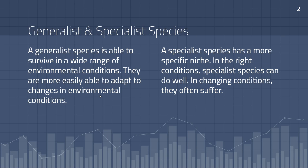A specialist species, on the other hand, has a more specific niche. In the right conditions, we can see populations in those specialist species increasing — they can do very well. But when those conditions change, if it's not a condition that is very specific to that specialist species, then those species can often suffer. When that environment changes, that species is no longer able to succeed.